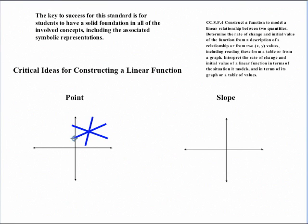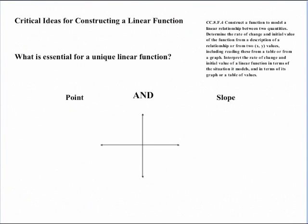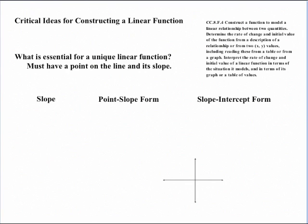By the same token, if I have a slope to work with, and let's say for example, here's my given line, the problem is that I can have an infinite number of lines with that same slope. So then what is essential to construct one function, which would be one line if it's a linear function, is that I've got to have both. I need a certain point and I have to have the slope for it, and so that determines just one unique line. So the key foundation is that I must have a point on a line and the slope of that line.